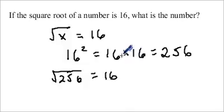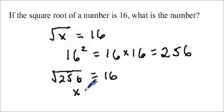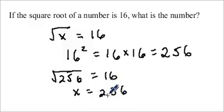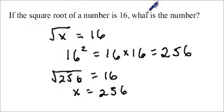In this case, our number — which we used x to denote — is 256, because the square root of 256 is 16. So once you know the square root of a number, to find the original number you just need to square the square root.